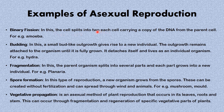In binary fission, the cell splits into two, each cell carrying a copy of the DNA from the parent cell — organisms formed are exact copies of their parents. An example is amoeba. In budding, a small bud-like outgrowth gives rise to a new individual. The bud remains attached to the organism until it is fully grown, then detaches and lives as an individual organism. An example is Hydra.